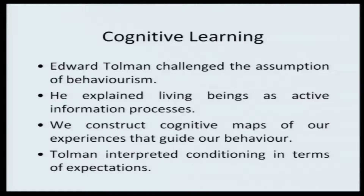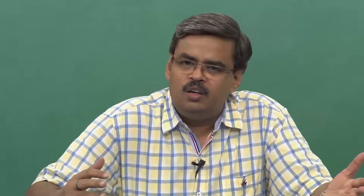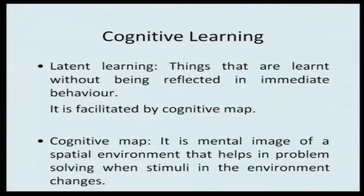Tolman's interpretation of conditioning was basically in terms of expectations. He talked about latent learning and the concept of cognitive maps. Latent learning is the learning of things that are not reflected in immediate behavior. Tolman's view was that cognitive maps facilitate latent learning. A cognitive map is a mental image of the spatial environment which helps us resolve the challenges the world poses before us.